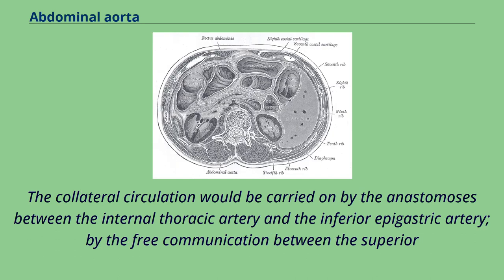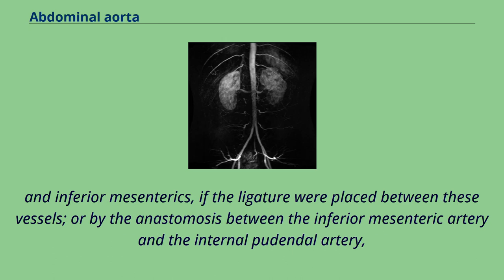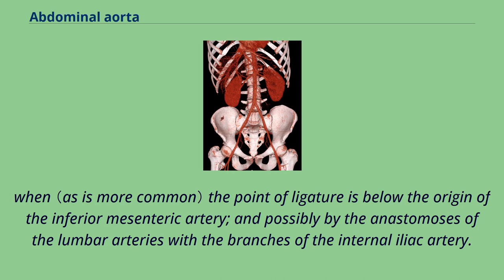The collateral circulation would be carried on by the anastomosis between the internal thoracic artery and the inferior epigastric artery, by the free communication between the superior and inferior mesenteric arteries if the ligature were placed between these vessels, or by the anastomosis between the inferior mesenteric artery and the internal pudendal artery. When the point of ligature is below the origin of the inferior mesenteric artery, and possibly by the anastomosis of the lumbar arteries with the branches of the internal iliac artery.